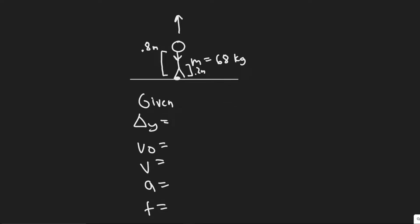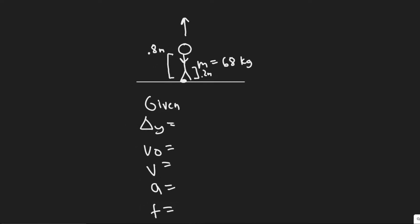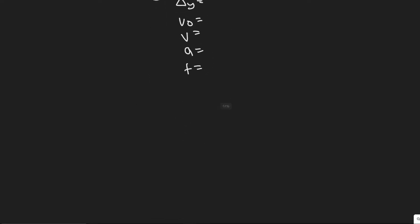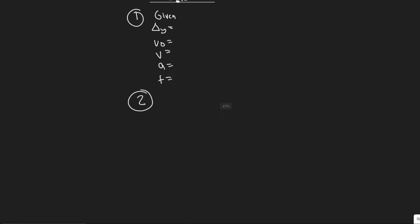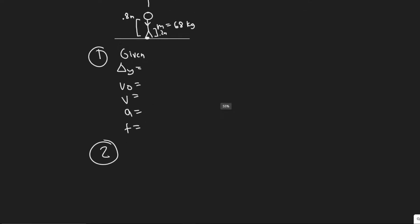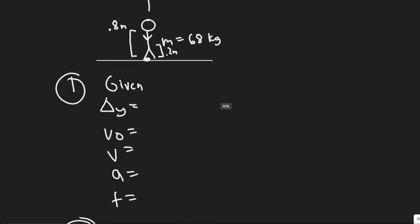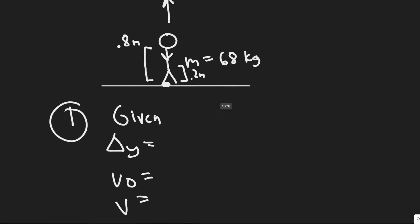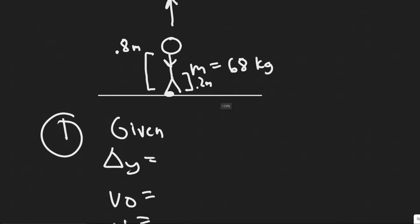This is going to be broken down into basically three main parts. The first one's going to be a kinematics problem, the second part's going to be a kinematics problem, and then the third part is where we actually solve for the forces. For the first part, what we're trying to find is the velocity at which the person is going to jump off the ground with.